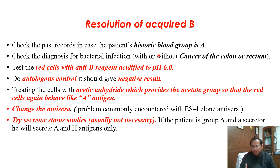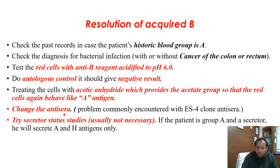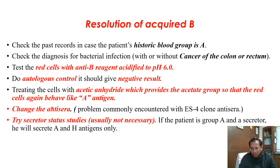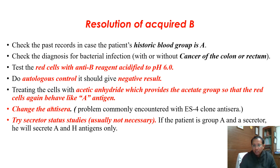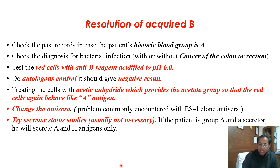Another point about acquired B phenomenon is that it came to attention because many anti-sera used at the time were of the same clone called ES4 clone, which was picking up this acquired B — something we don't want anti-sera to do. Once that clone was changed, results improved, so we should check the lot and whether we are using the same clone. You can also perform a secretor status study — though usually not necessary — since if the patient is group A and a secretor, they will secrete only A and H antigens in their secretions.